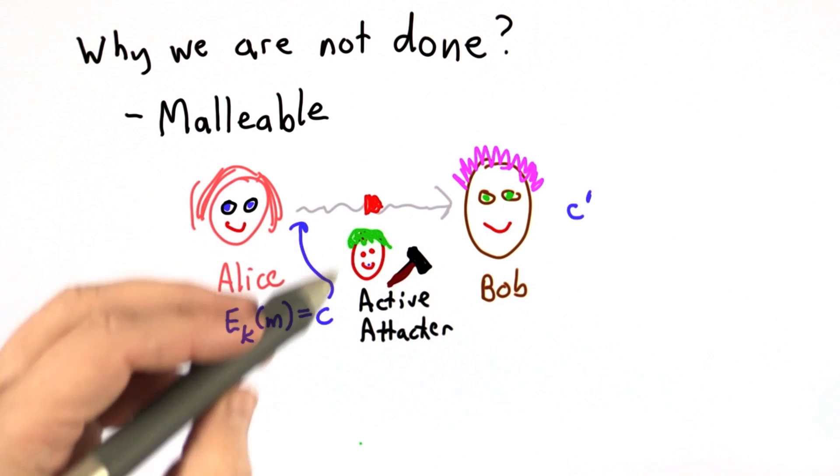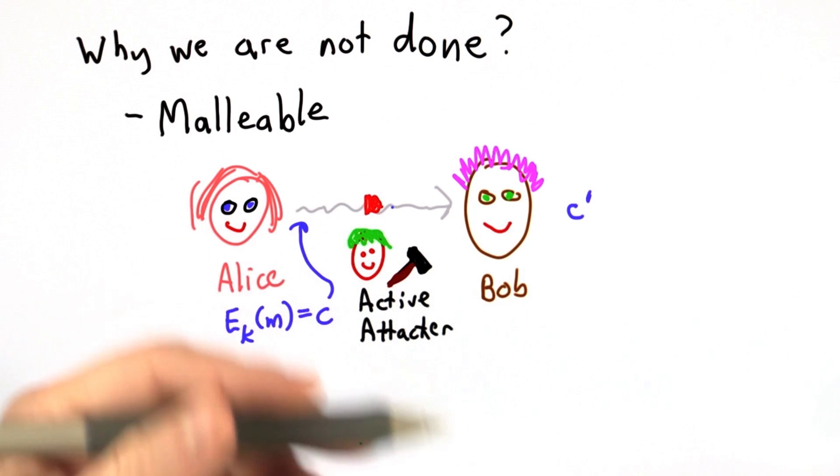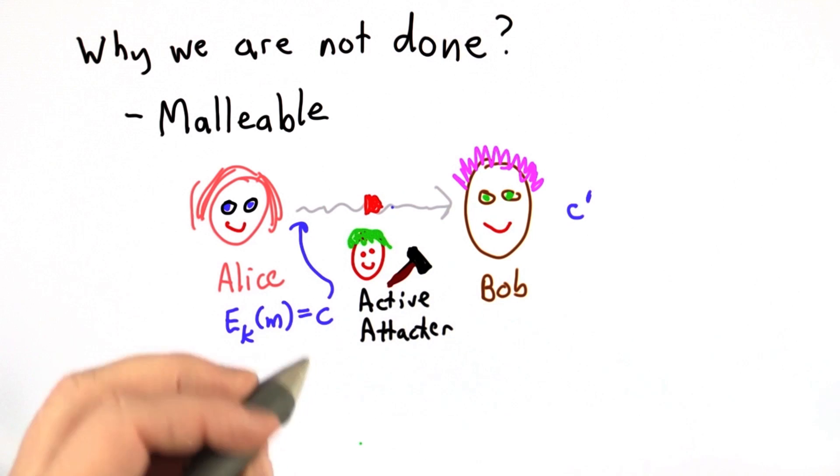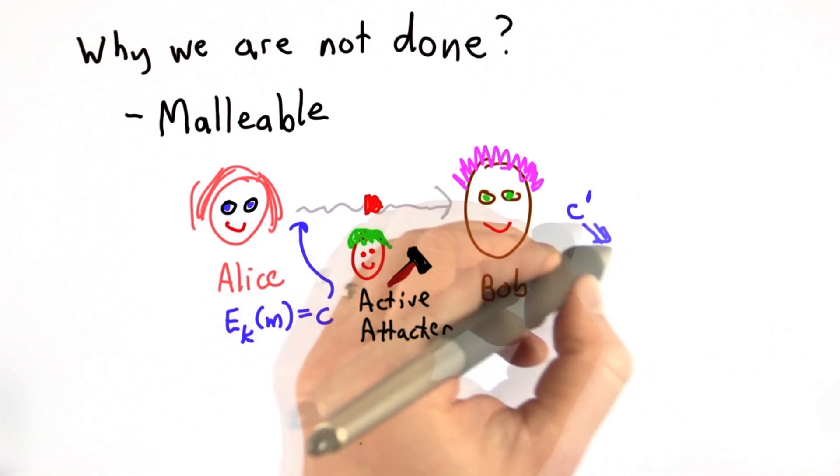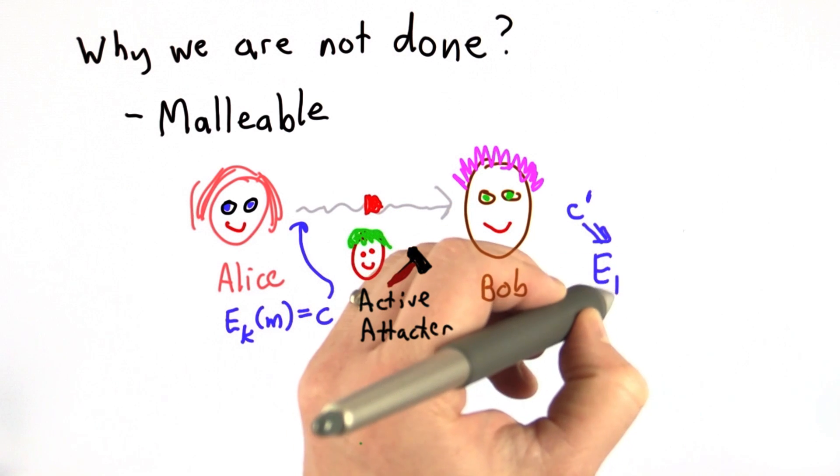And maybe she had a pretty good guess about maybe there was a number in the message somewhere, or something that she wanted to change. Well, she could flip the bits at that part of the message, change the ciphertext that Bob receives to c. It would decrypt, and with the one-time pad, encryption and decryption are the same function.